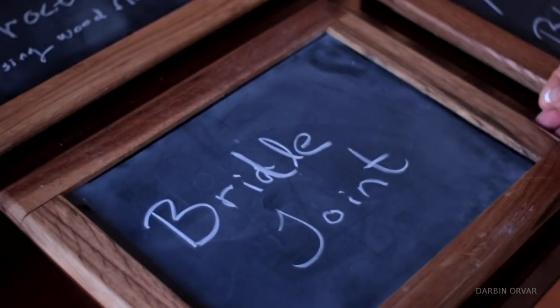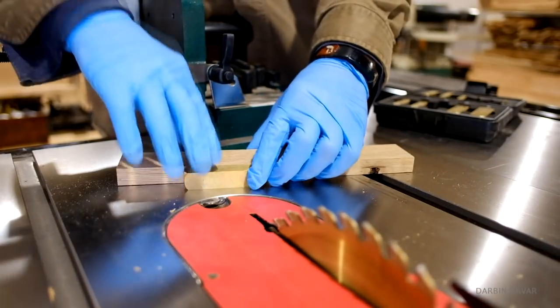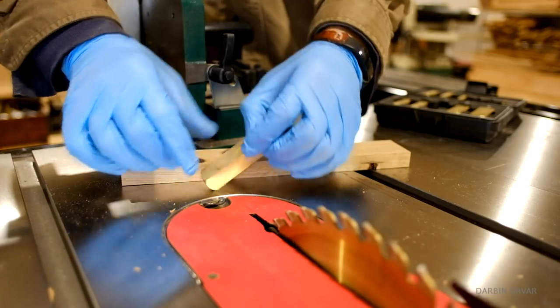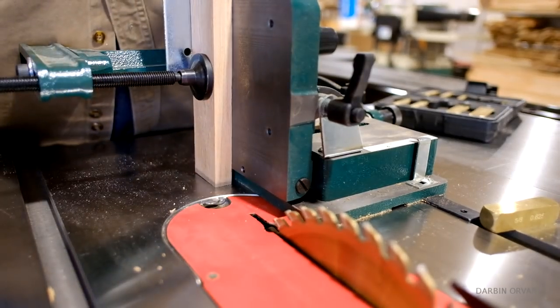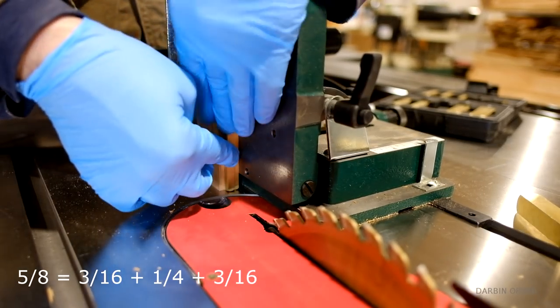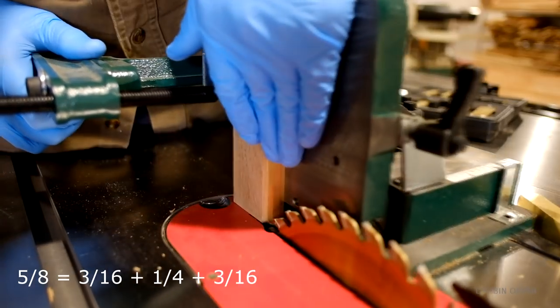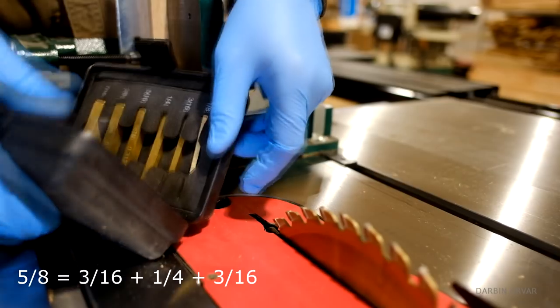To join these frames together, using this tenoning jig to create a bridal joint. The thing to focus on with this jig as well as most other jigs is obviously setup and getting it right. And these space bars come in really handy here. The wood is 5/8 of an inch which equals 3/16 of an inch on one side, 1/4 of an inch in the middle for the tenon, and 3/16 of an inch on the other side.